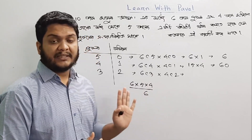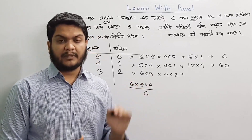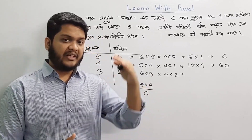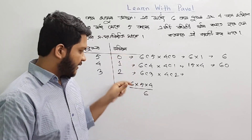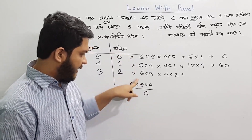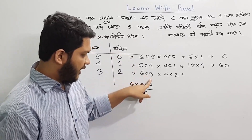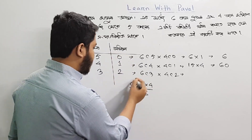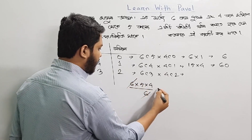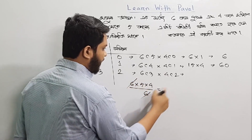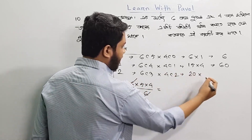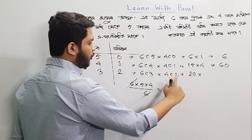So 6 into 5 into 4 divided by 6. So what is it? We have nC3 is n into n-1, n-2 divided by 6. So we have n, n-1, n-2 divided by 6. So the 6s cancel out, we have 20.